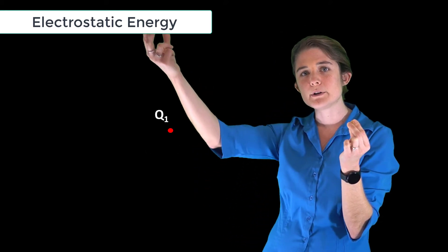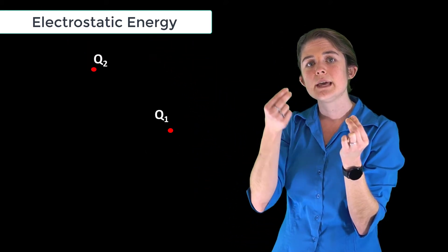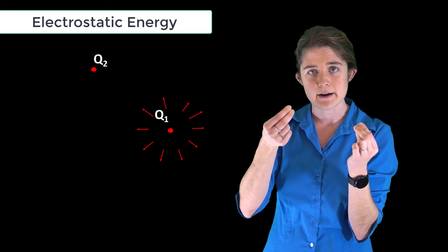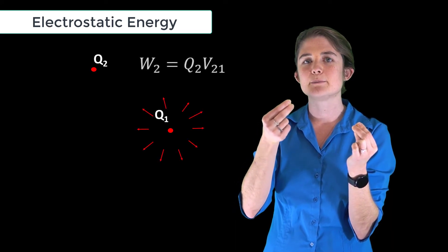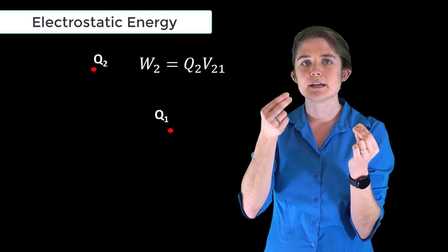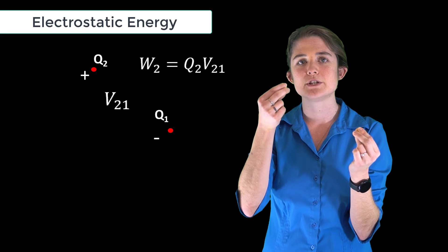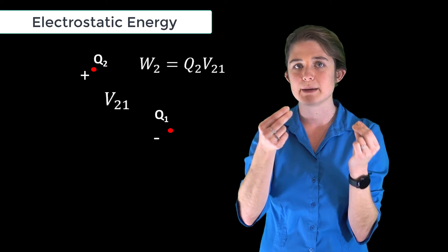But when we go to pull a second charge, q2, into the system, it does experience a force because of the field around the charge that's already there. The work it takes to pull in this charge is equal to q2 times the voltage v21, the voltage q2 experiences because of q1.